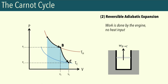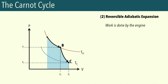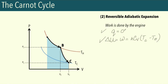The next step is a reversible adiabatic expansion. This is when our gas is expanding against the piston with no heat input, and this time it's cooling down — done adiabatically. Since this is an adiabatic process, Q is equal to zero, so the work done by the gas is at the expense of the internal energy. Since we're doing work, the internal energy decreases, and we have a corresponding decrease in temperature — going from the high-temperature reservoir to the cold-temperature reservoir. The work here is equal to NC_V(T_C − T_H), which is also equal to ΔU.